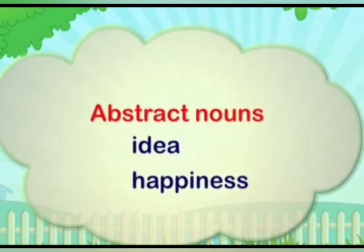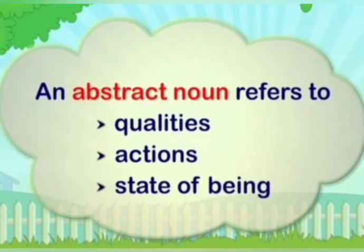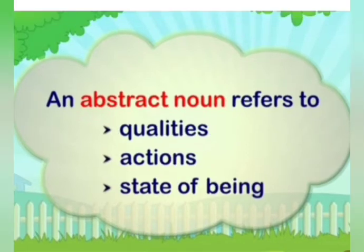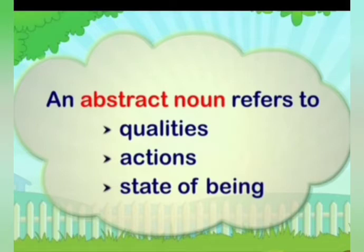An abstract noun refers to qualities, action, and state of being. It is depending on qualities — a person's quality, what action is going on. And state of being: how is that person? It will show about the state of being of a person.